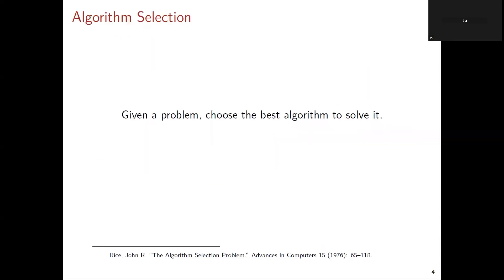This is really the question: given a problem, choose the best algorithm to solve it. This goes back to the mid-1970s when it was first asked in the literature, and we're still working on that. That is really the simplest formulation of this problem. If you define algorithms sufficiently broadly, this could include the parameters or hyperparameters for the algorithm as well. In practice, the difficulty is that the number of possible algorithms might be extremely large, so we have to do this somewhat intelligently.